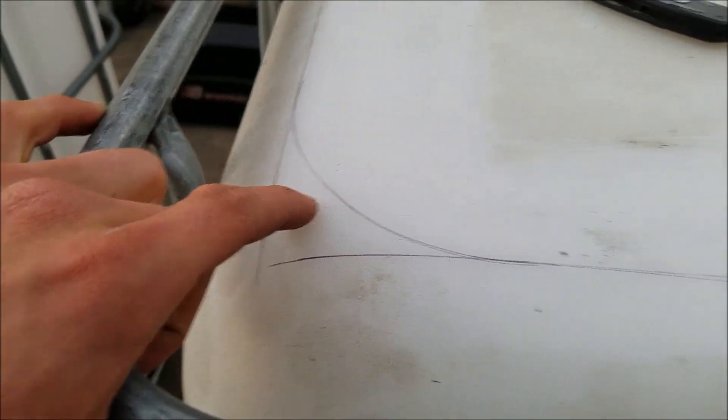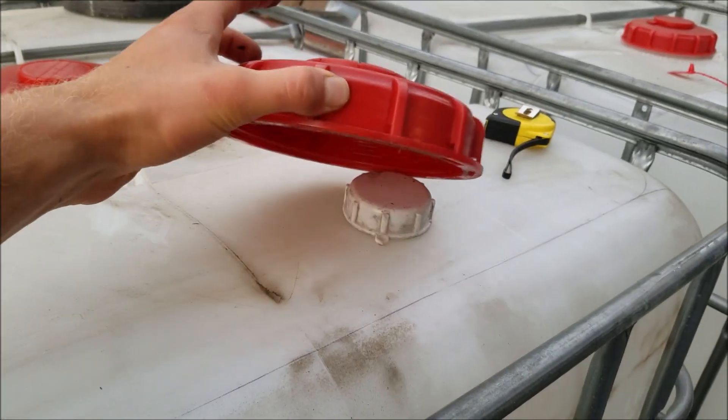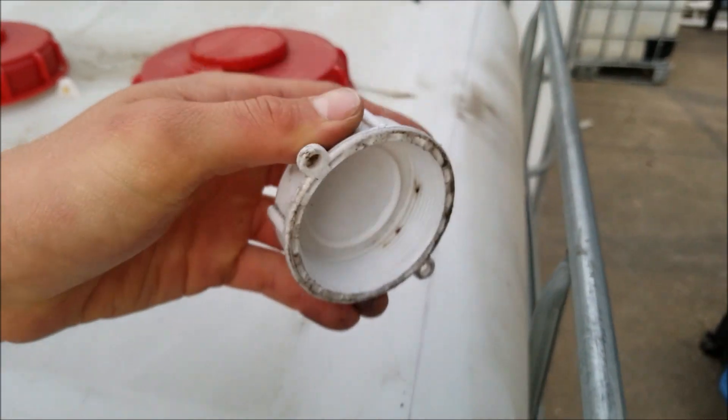To make this curve, I use the cap of the IBC tote, and to make the curve that I have over here, I use the drain cap that goes at the bottom from one of these.